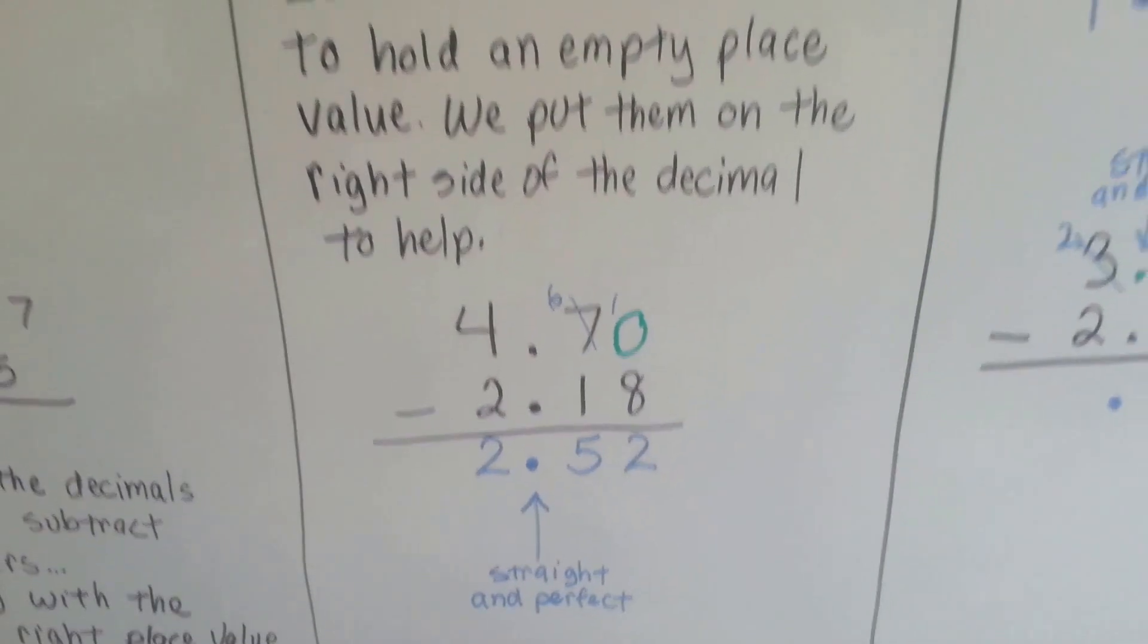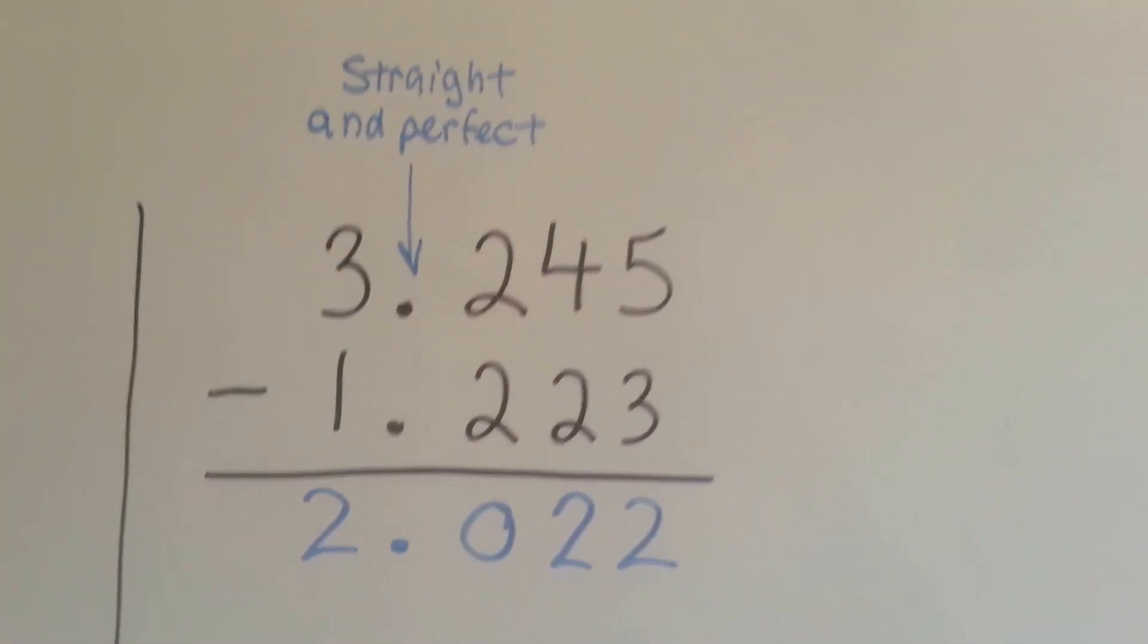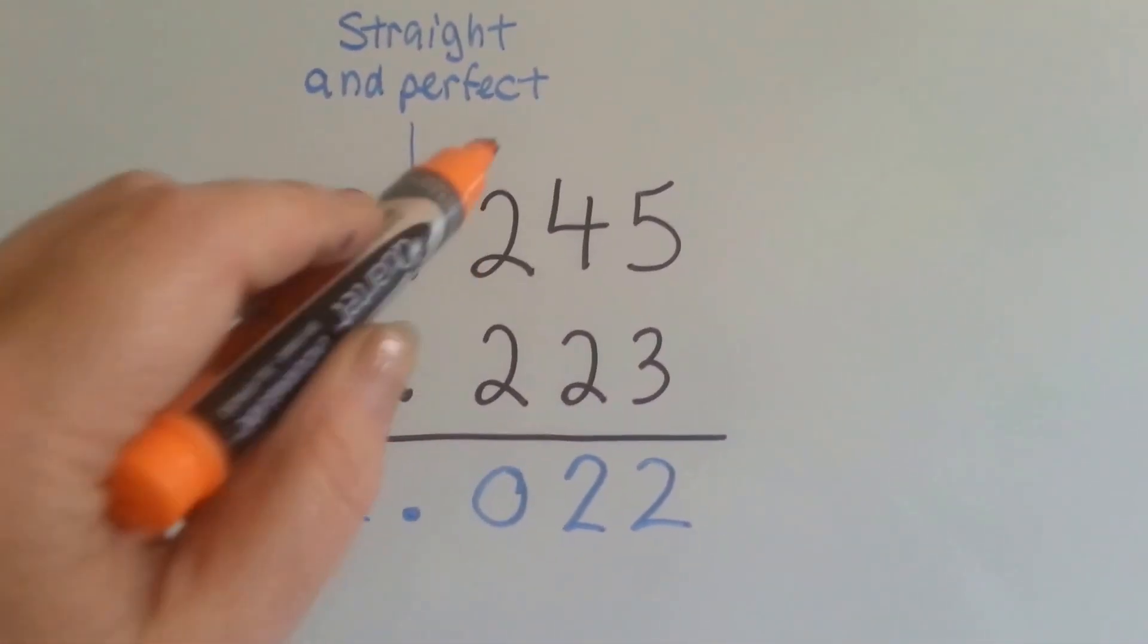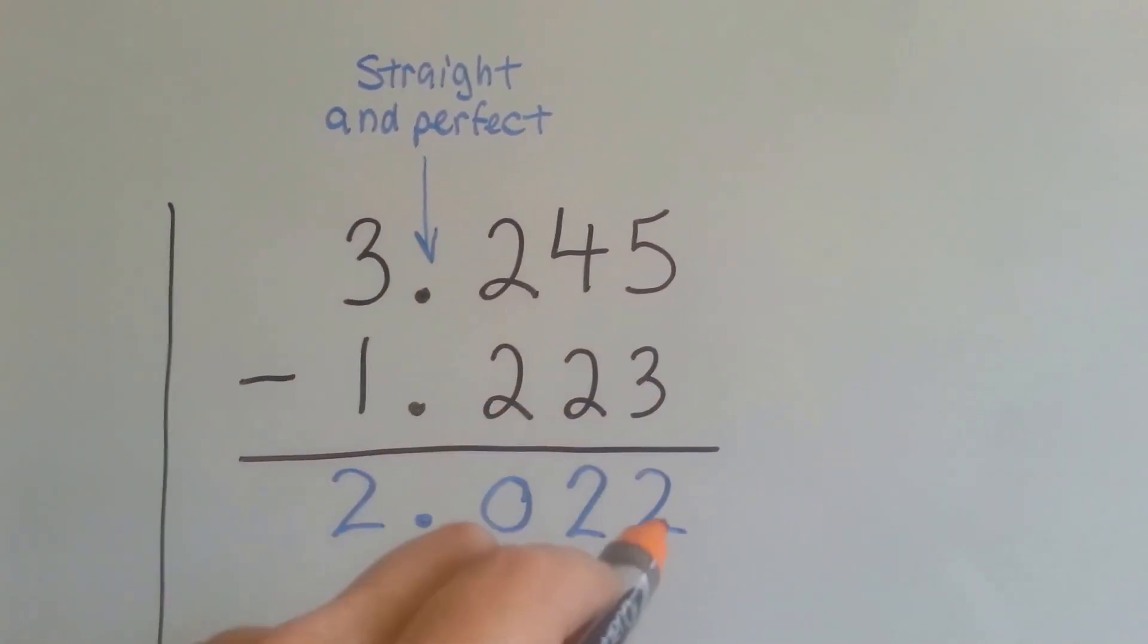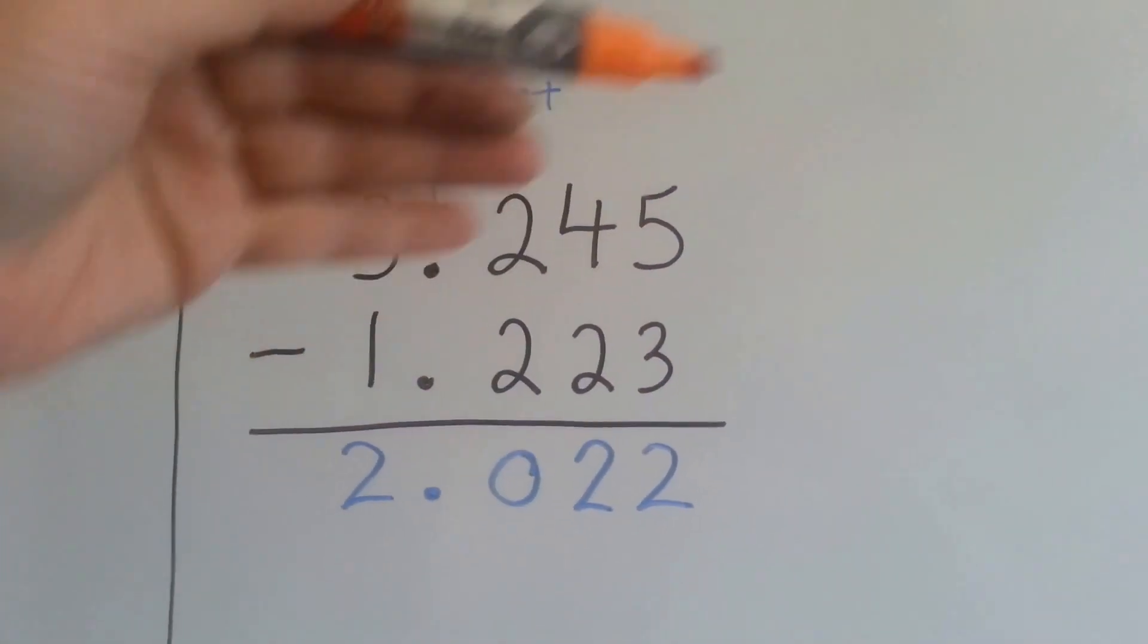Just add the zero. Keeping it straight and perfect, all of our columns will be able to subtract perfectly.